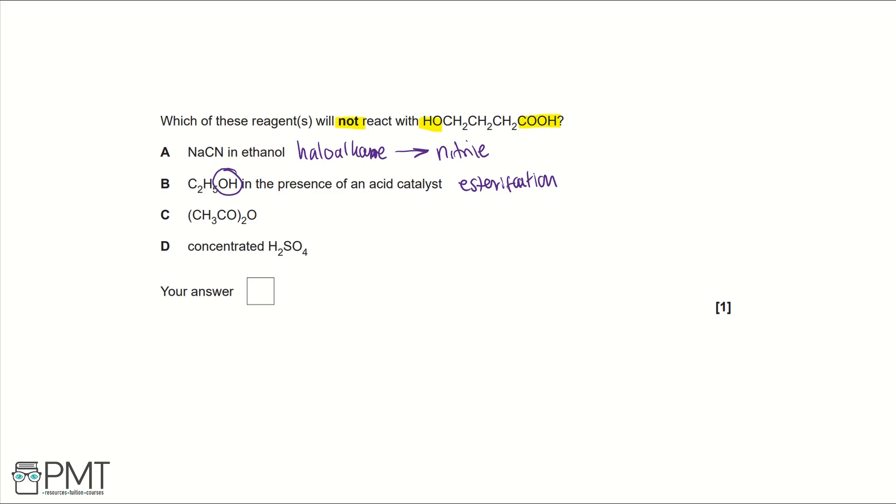Then looking at C: this is what's called an acid anhydride. And what these do is they react with alcohols to form esters again. So an acid anhydride will form an ester with our alcohol.